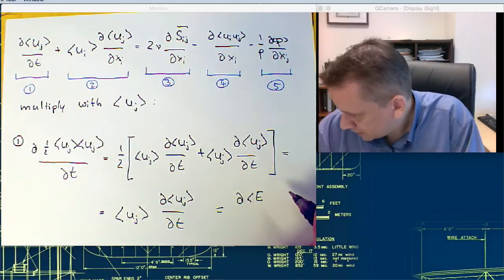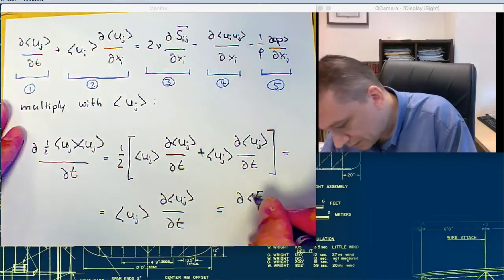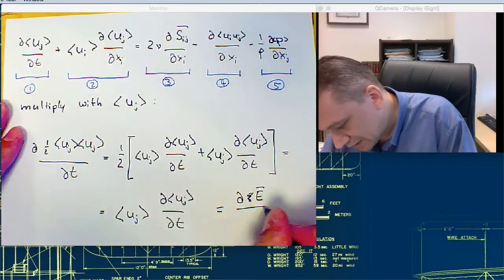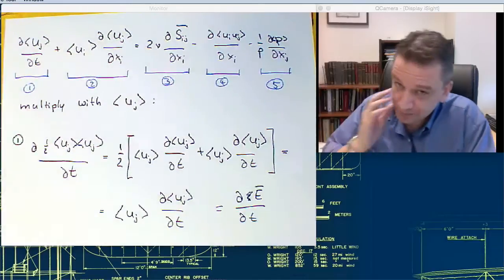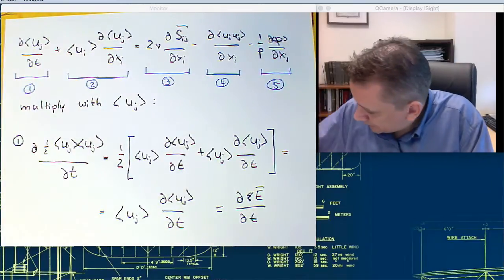So this term here, if you multiply that, it's just this one, and this one is essentially the mean flow energy. We call that e bar dt.